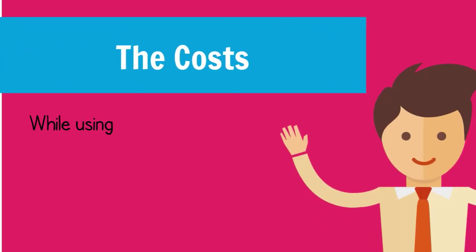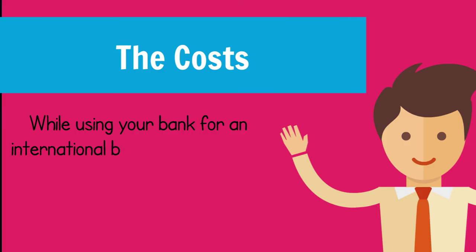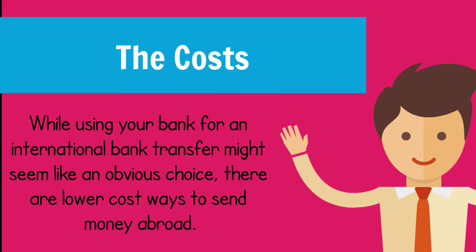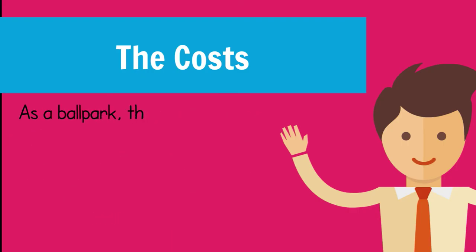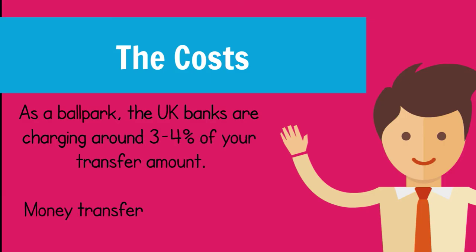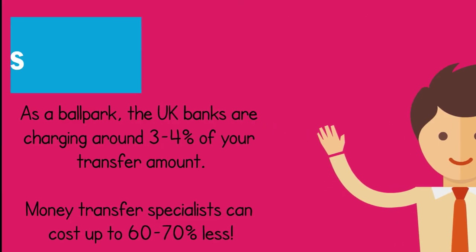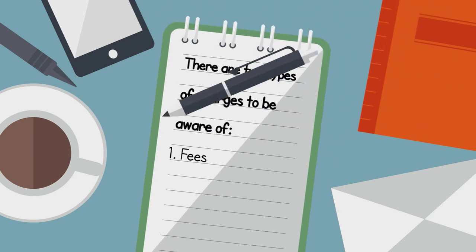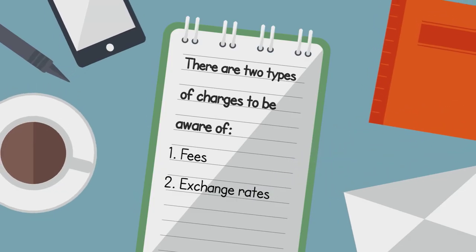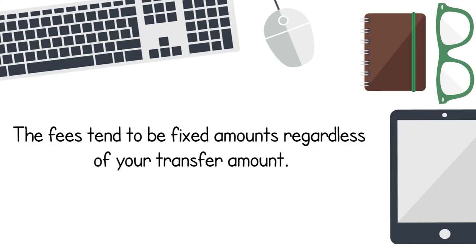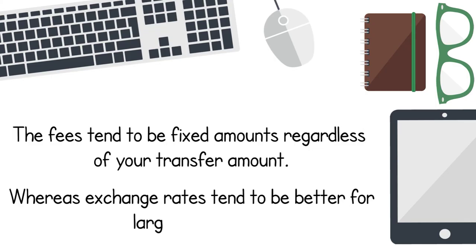The costs. While using your bank for an international bank transfer might seem like an obvious choice, there are lower cost ways to send money abroad. As a ballpark, UK banks are charging around three to four percent of your transfer amount. Money transfer specialists can cost up to 60 to 70 percent less. There are two types of charges to be aware of: one, fees; two, exchange rates. The fees tend to be fixed amounts regardless of your transfer amount, whereas exchange rates tend to be better for larger amounts.